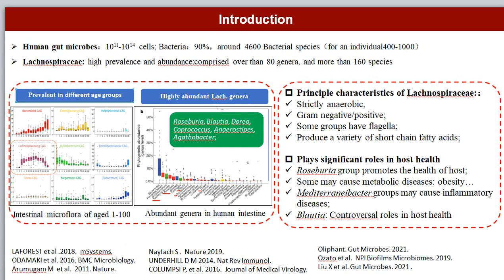Members of Lachnospiraceae are strictly anaerobic, gram-stain variable, and produce a variety of metabolites, including short-chain fatty acids. They play significant roles in the host's well-being. Members such as Roseburia play positive roles in host health, while other members such as Mediterraneibacter and Blautia play divergent roles in host health.